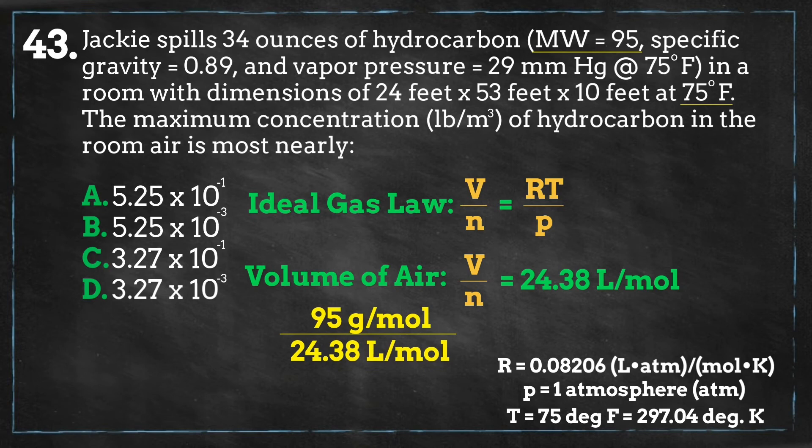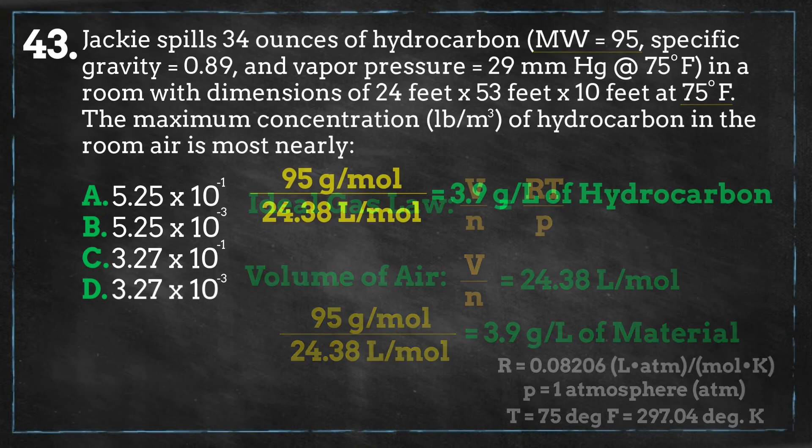We can divide the molecular weight by this volume to get the amount of hydrocarbon that can fit in each liter of the air, and we get 3.9 grams of material per liter of air.